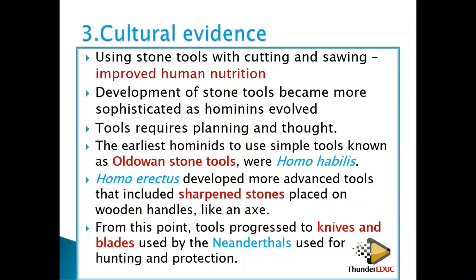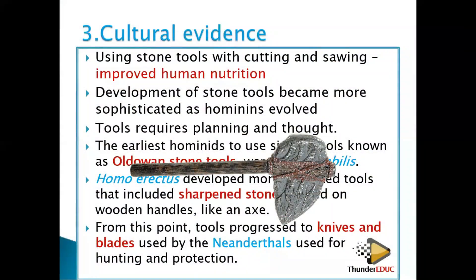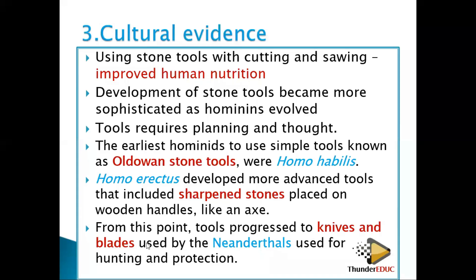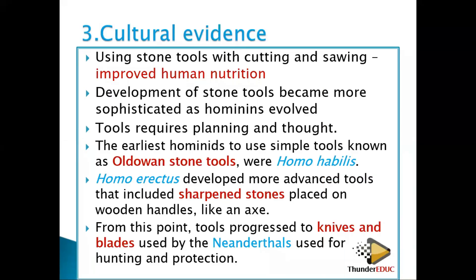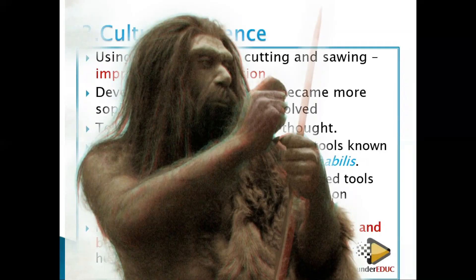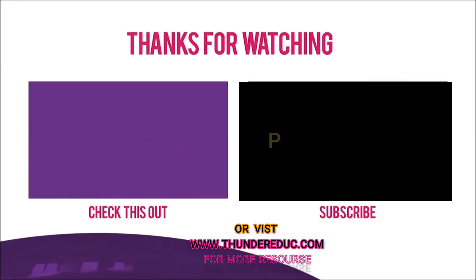They would sharpen a stone, attach it to wood, and make a spear — similar to what you see in adventure movies. Some tools were used as axes to cut trees. From this point, tools progressed to knives and blades, which could be used to remove animal skin. These tools were used by Neanderthals for hunting and protection.